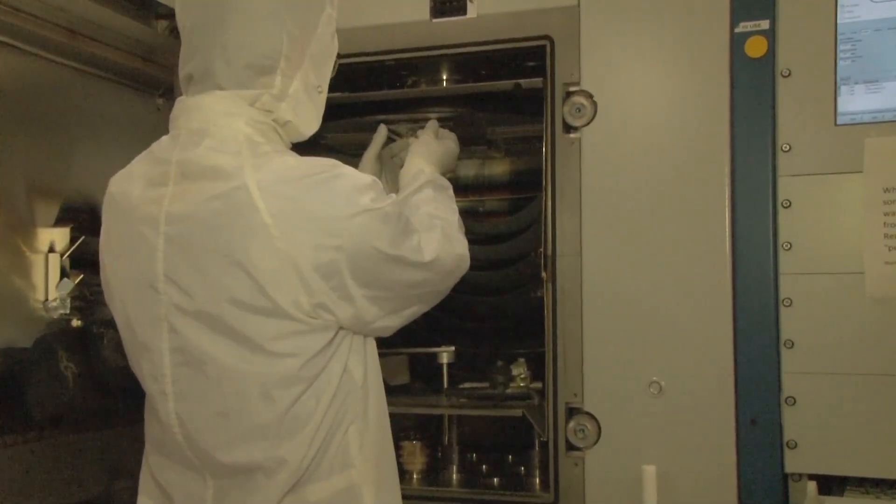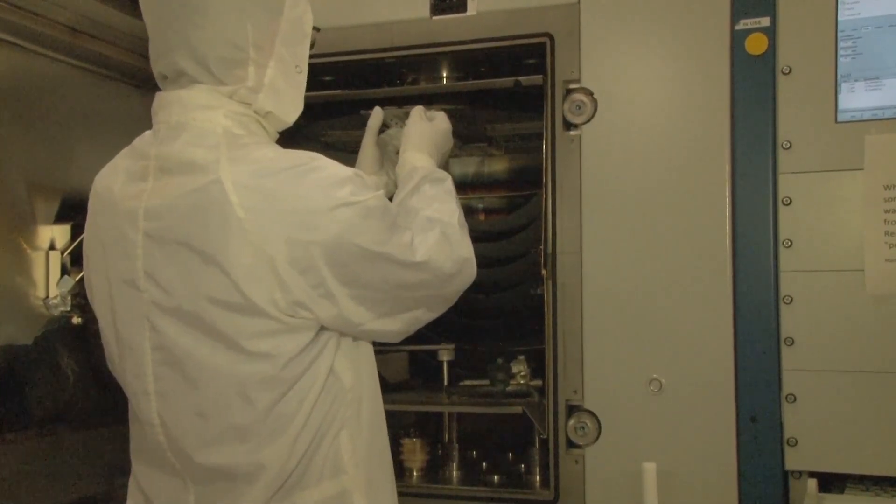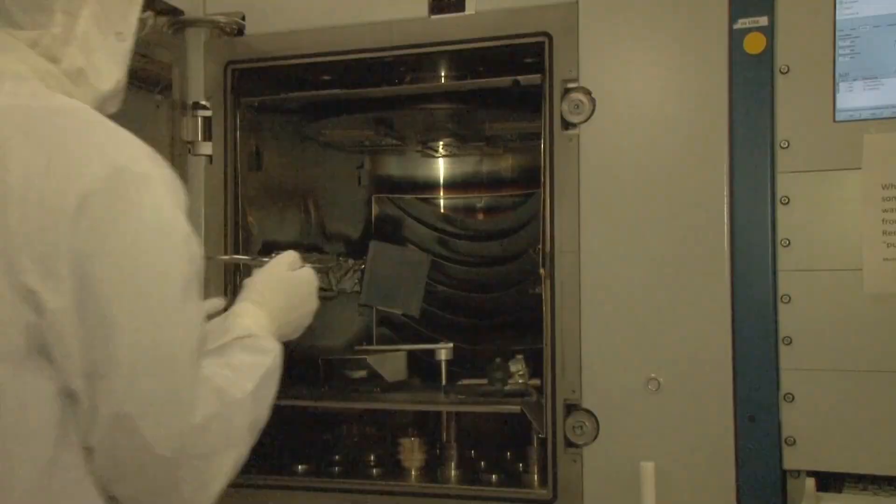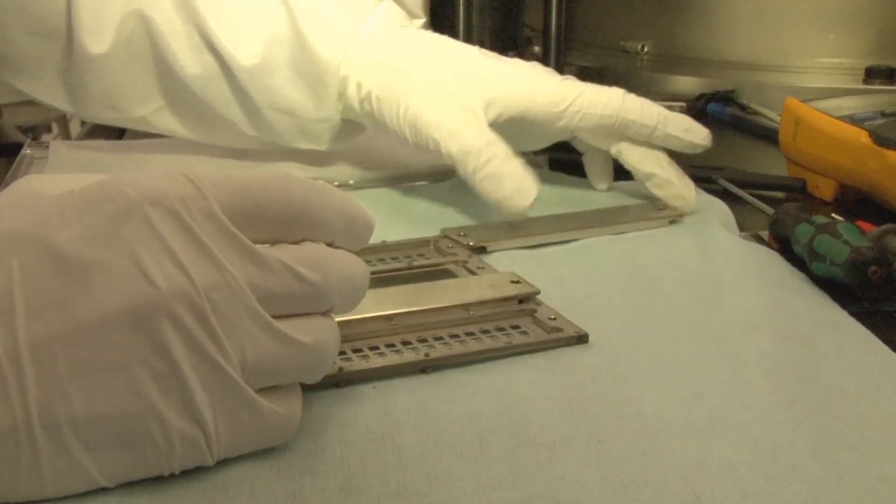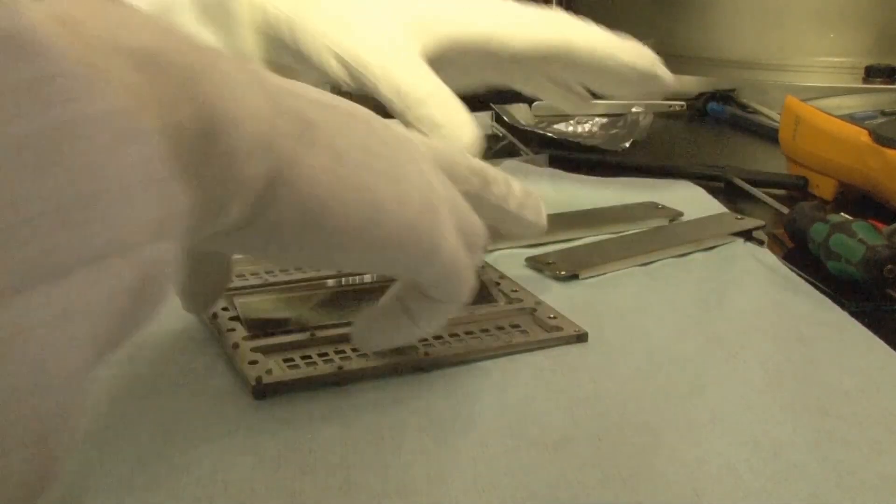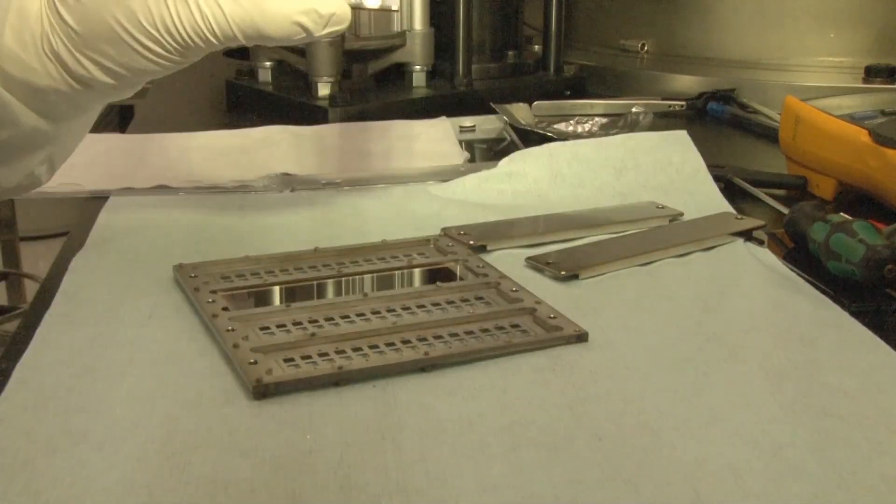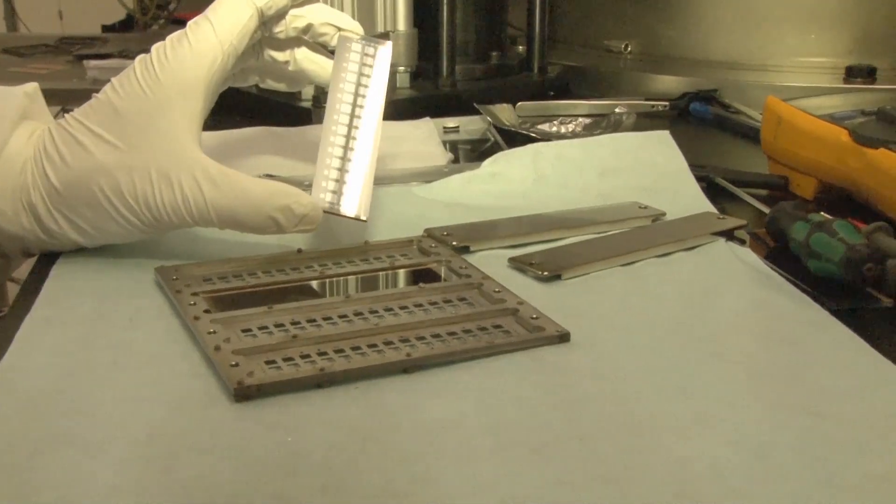After taking the solar cell out of the E-beam evaporation setup, we can see the final silicon solar cell on lab scale. Every metal contact represents a solar cell.